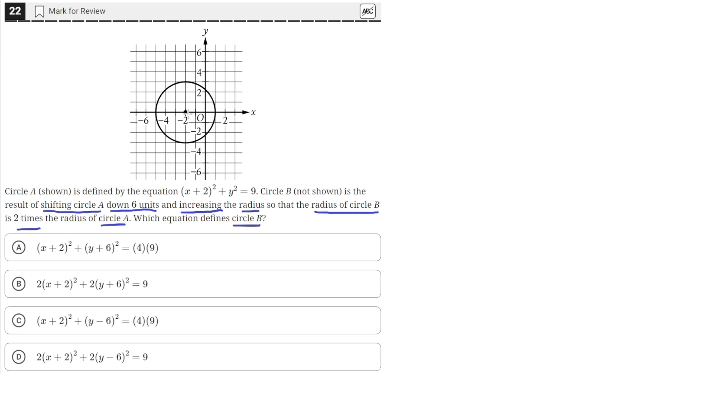So circle A, which is shown on the graph, is a circle with its center at negative 2, 0, and it has a radius of 1, 2, 3 units.